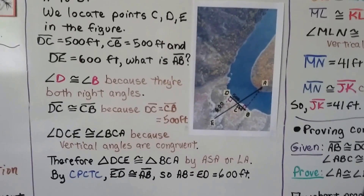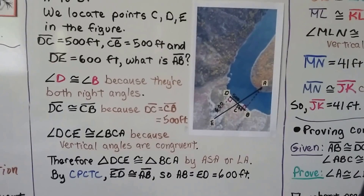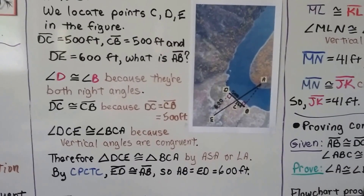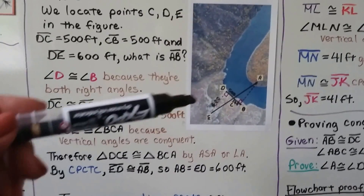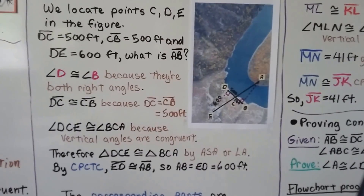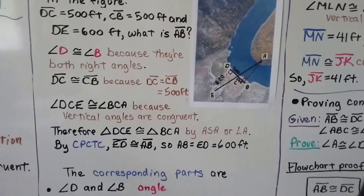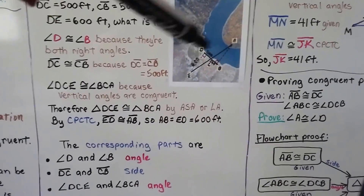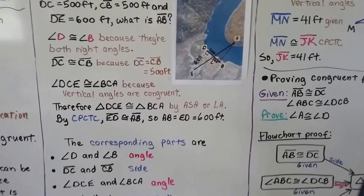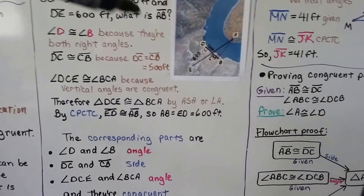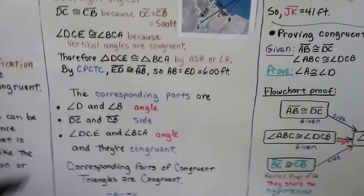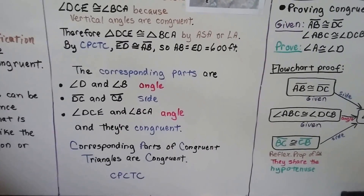We could even say leg acute angle. By CPCTC, segment ED is congruent to segment AB, so it's 600 feet. The corresponding parts are angle D and angle B, the two right angles; segment DC and segment CB, both 500 feet; and angle DCE and angle BCA as vertical angles — angle, side, angle. So corresponding parts of congruent triangles are congruent. That's CPCTC.